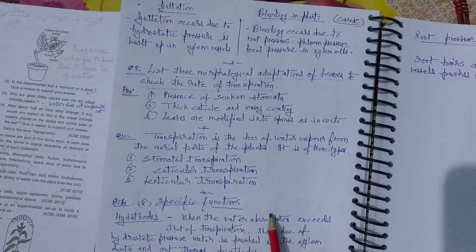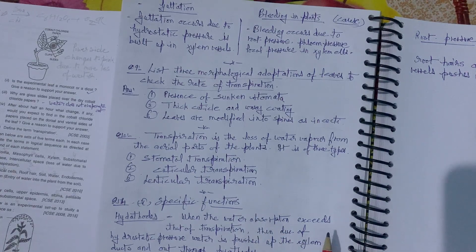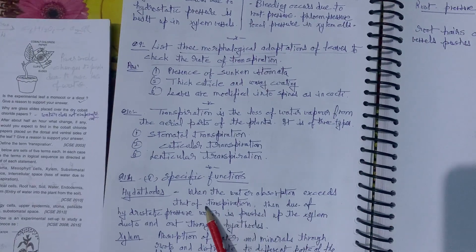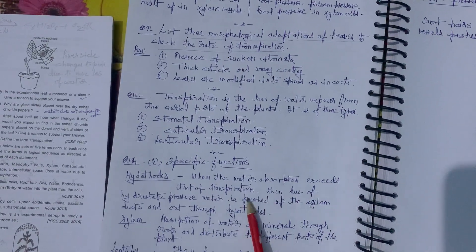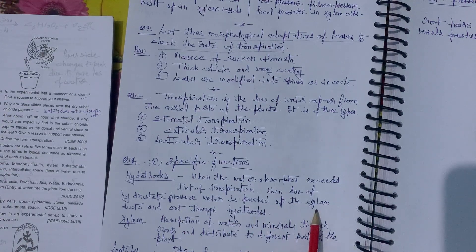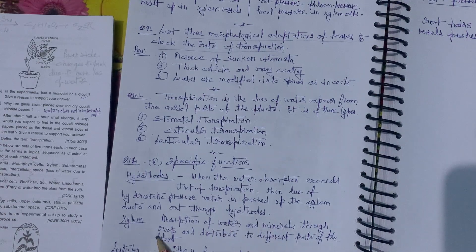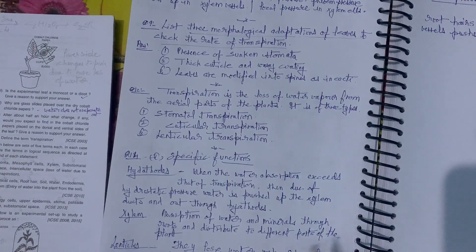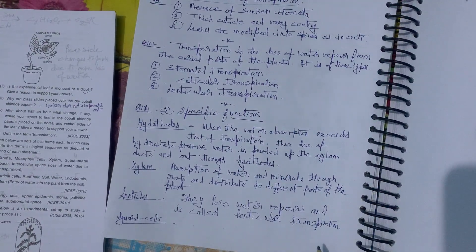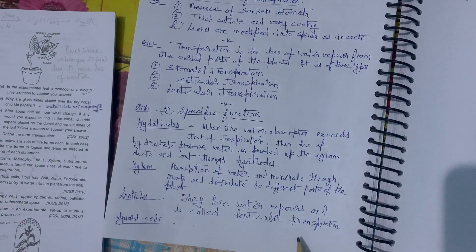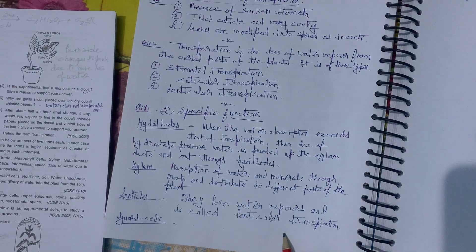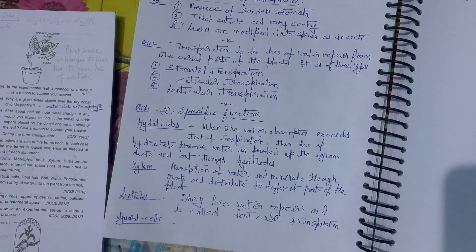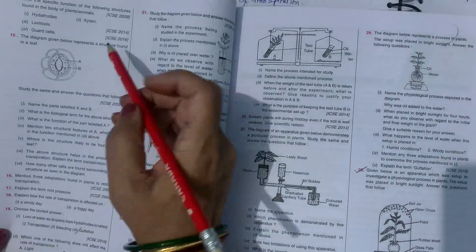Specific functions: Hydathodes — when water absorption exceeds transpiration, due to hydrostatic pressure water is pushed up through xylem cell ducts and out through the hydathodes. Xylem — absorption of water and minerals through roots, distributed to different parts. Lenticles — they also lose water vapors (lenticular transpiration). Guard cells — help in opening and closing of stomata through which water vapor is evaporated.